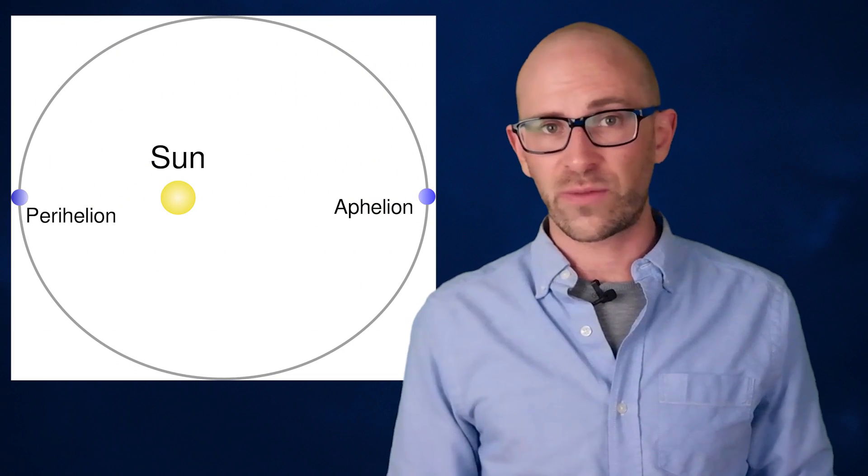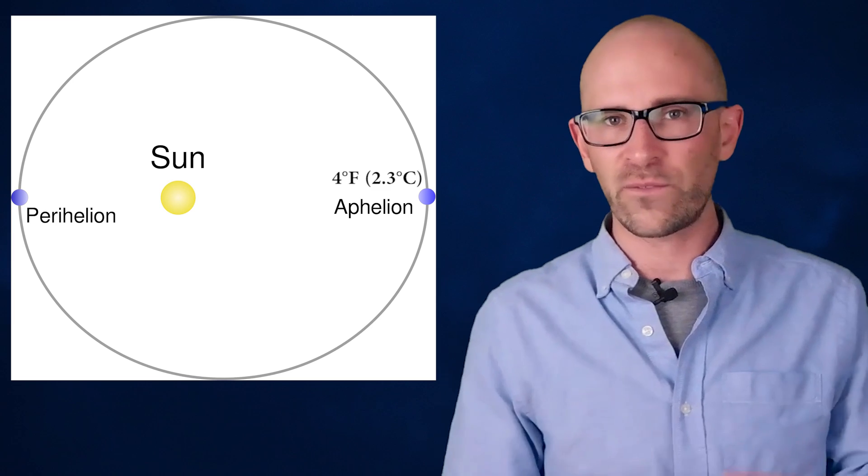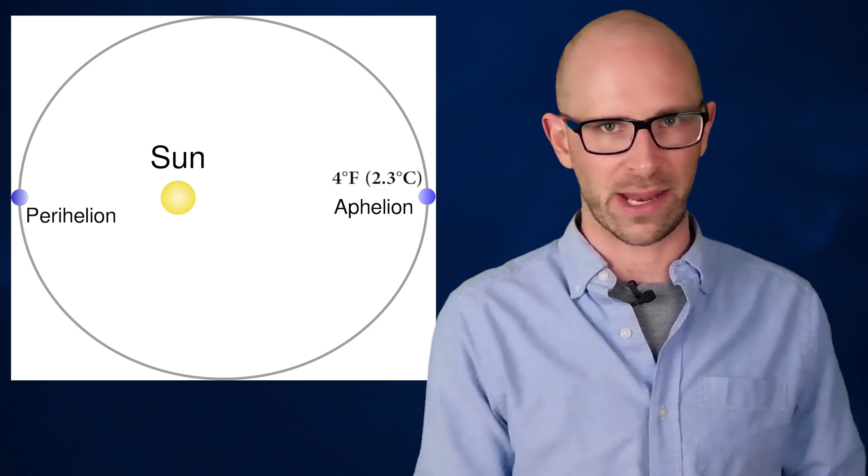During the period when the Earth is furthest from the Sun, the average temperature of the entire planet is about 4 degrees Fahrenheit or 2.3 degrees Celsius higher than when it is closest to the Sun.